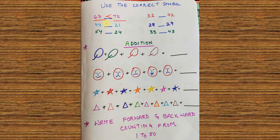Then 44 and 21 — 44 is greater than 21. 54 is greater than 24. 32 is smaller than 42. 28 is smaller than 29. And 33 is smaller than 43. So here you will know whether your kids understand greater than or smaller than signs well, or if you need to revise them again. LKG and UKG students should know greater than and smaller than, and you will also know how much they understand.